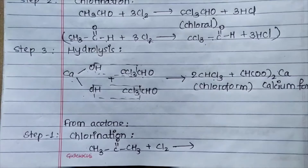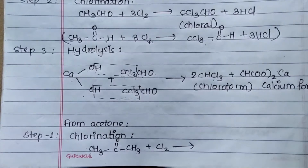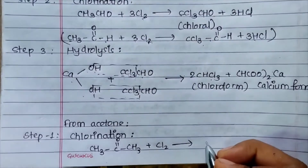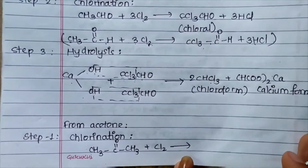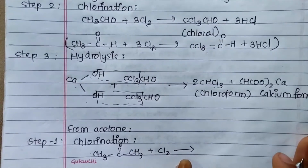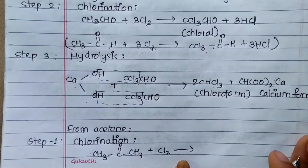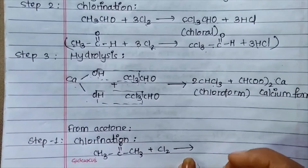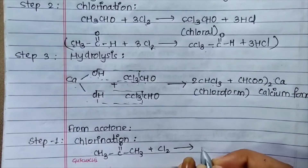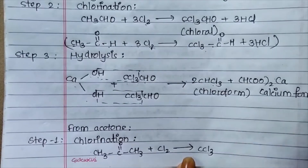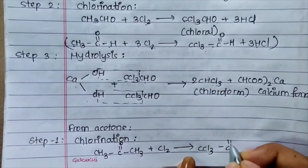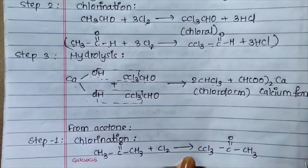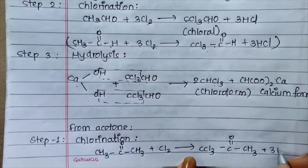In the case of acetone, we react acetone directly. It undergoes chlorination to give trichloroacetone (CCl3·CO·CH3), and then hydrolysis gives CHCl3 plus 3 HCl as products.